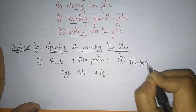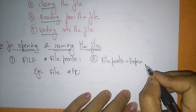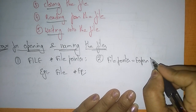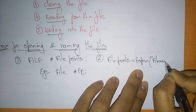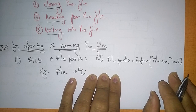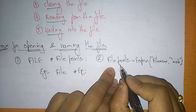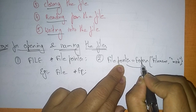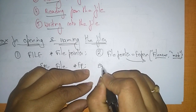The syntax for opening and naming a file is: file_pointer = fopen(file_name, mode). The file pointer points to the file which is opened in the specified mode. Let me write an example for this so you will clearly understand.